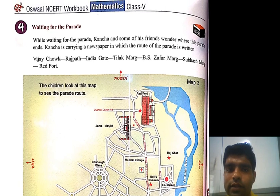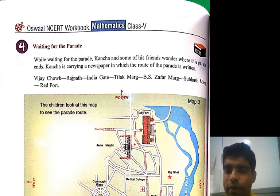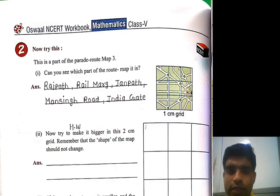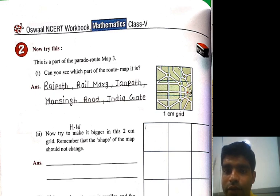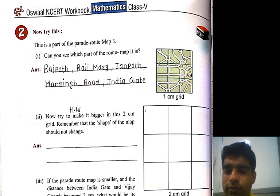Now let's start the 'Try This' section. This is part of the route map. The question is: can you see which part of the route map it is? A one centimeter grid is already given. The map shows Rajpath, Rail Marg, Janpath, Mansingh Road, and India Gate — already given to you.